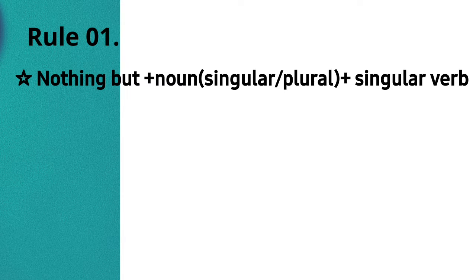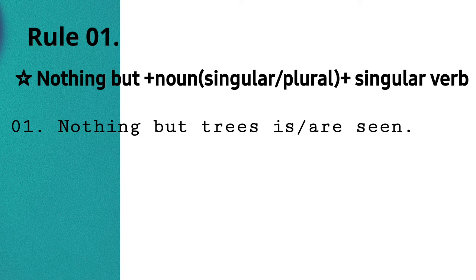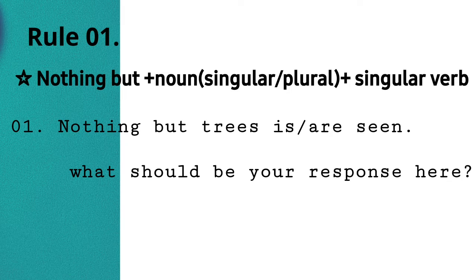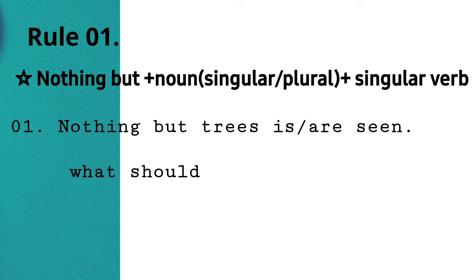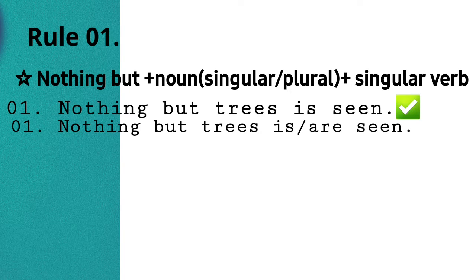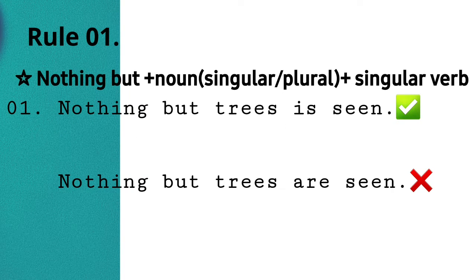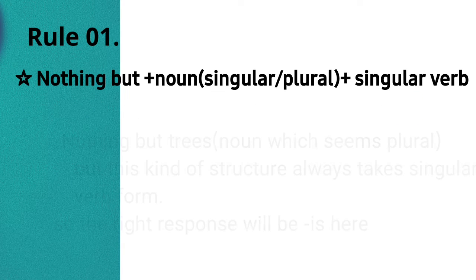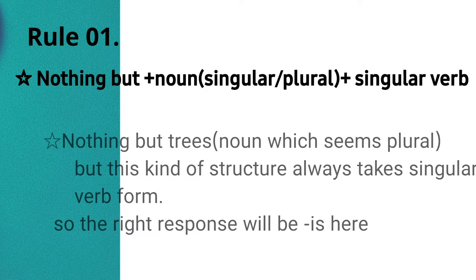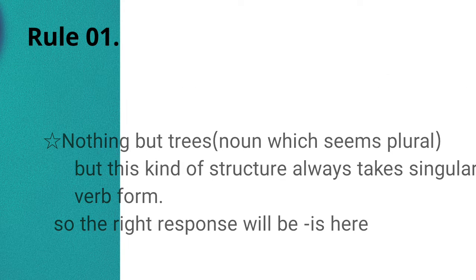Here is the first tool, where we have a structure like 'nothing but' followed by a noun. The question is: 'Nothing but trees is seen' or 'Nothing but trees are seen' — which is correct? The answer is 'is seen.' Even though 'trees' seems plural, because it follows the structure 'nothing but,' it will always take singular form in any situation.